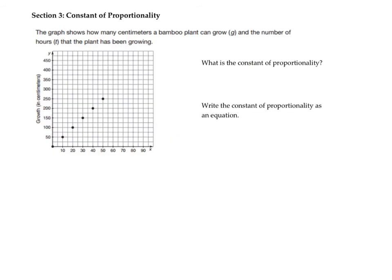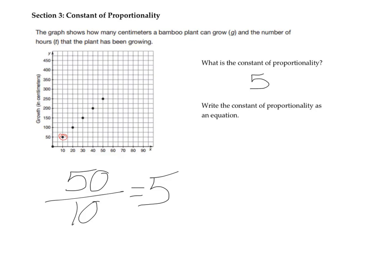Section 3: constant of proportionality. The graph shows how many centimeters a bamboo plant can grow over hours. Remember, the constant of proportionality is the unit rate — just another word for unit rate when a problem is proportional. Pick a ratio from the graph: 50 over 10 gives a rate of 5 per hour. So the constant of proportionality is 5, and the equation is y equals 5x.